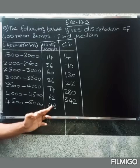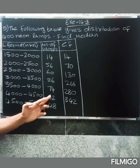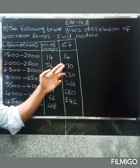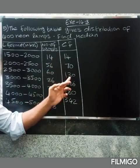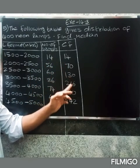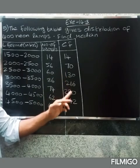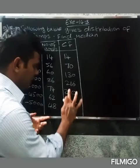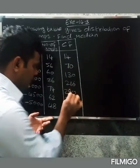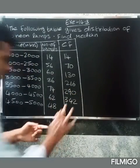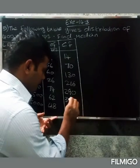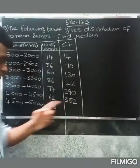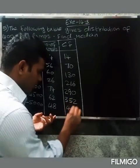So 342 plus 352. So 14, 70, 130, 216, 6 plus 4, 110. So sorry, 290. So 290 plus 62, 352. So 352 plus 48, 400.